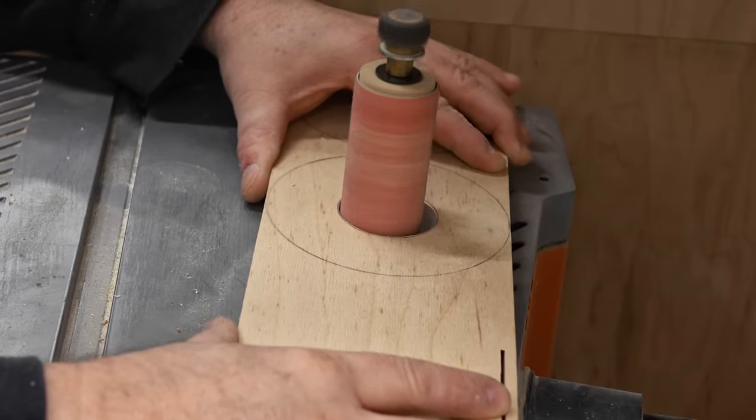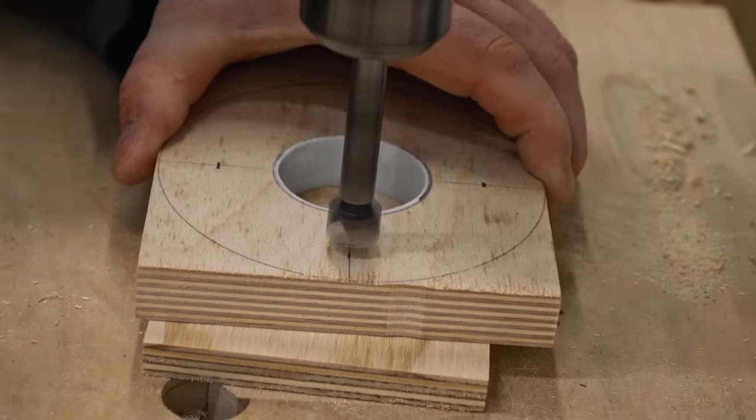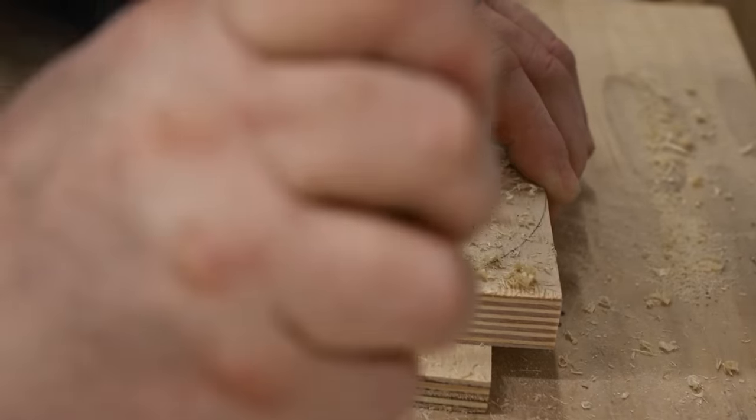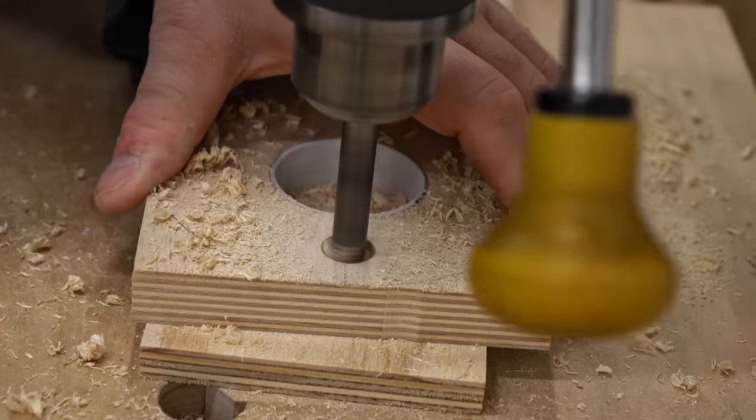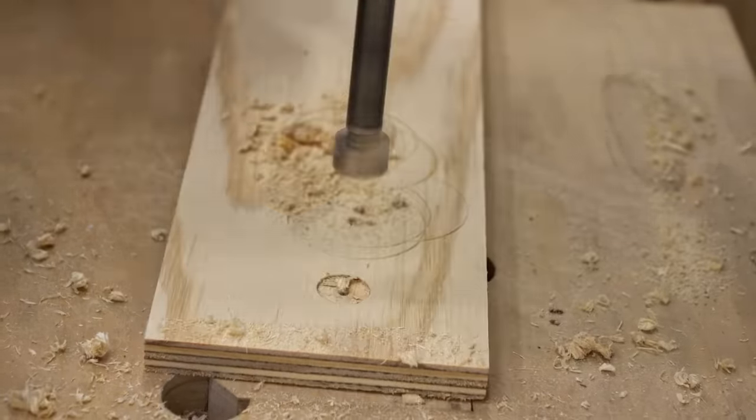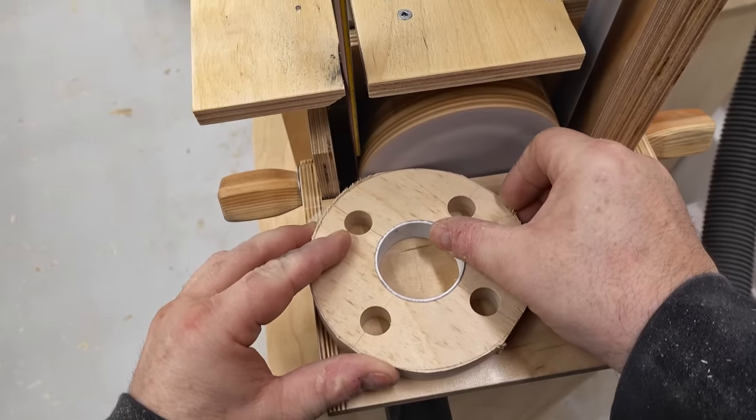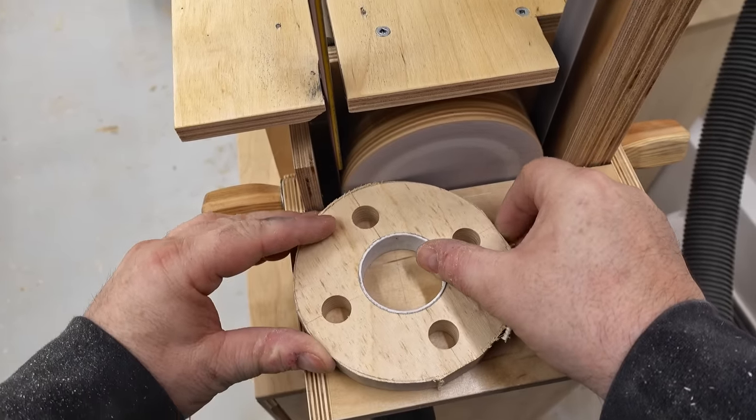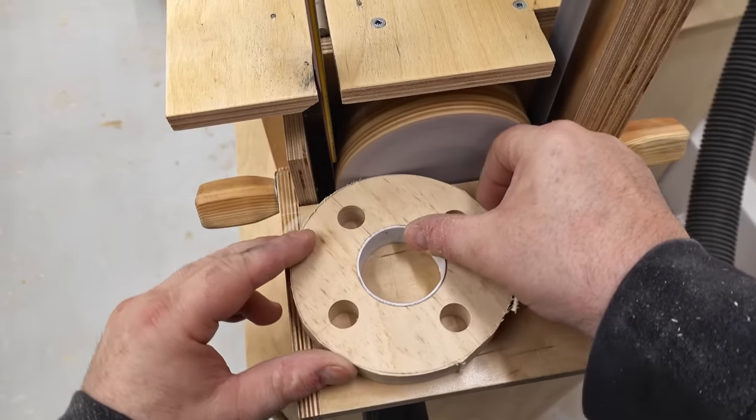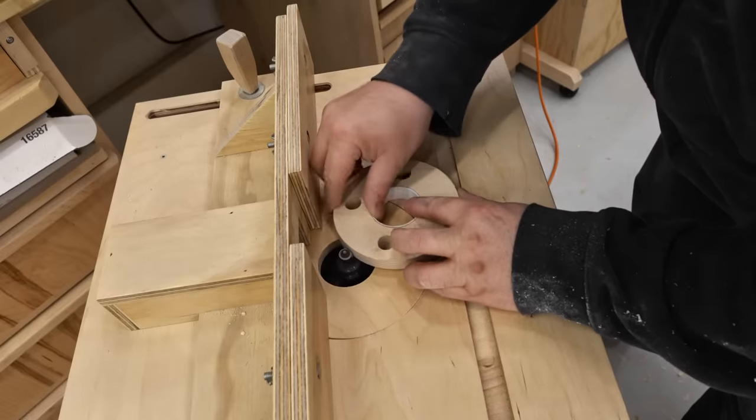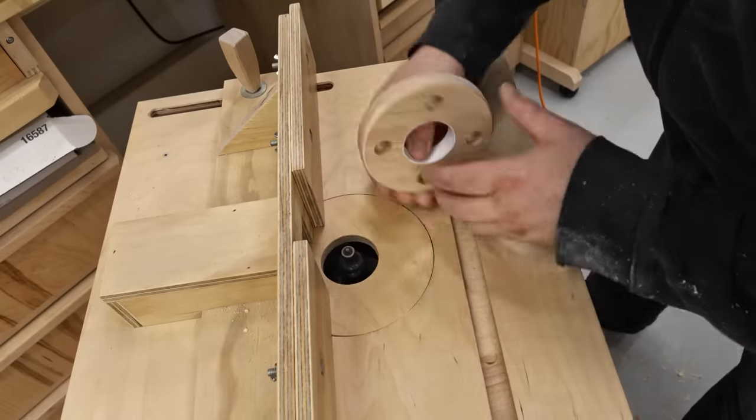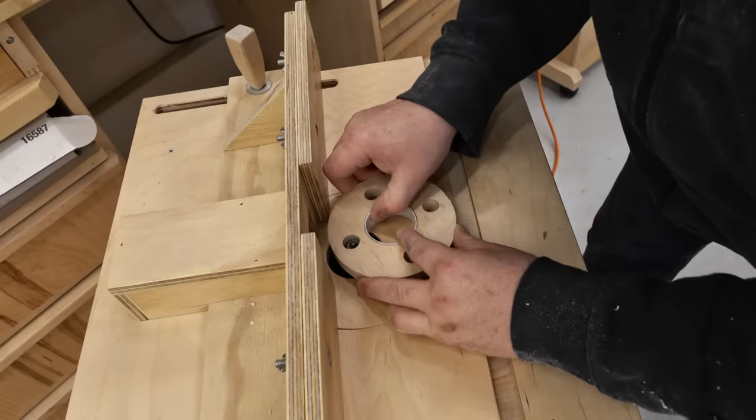And then, this is just decorative, but I drilled four holes around the perimeter, and it makes it look more attractive, I think, more like a wheel. I could then cut out the wheels with the jigsaw, and fine-tune the roundness of them on the belt disc sander. And then I can bring it to the router table and round over all of the sharp corners.